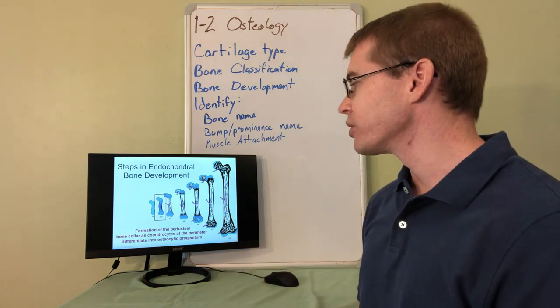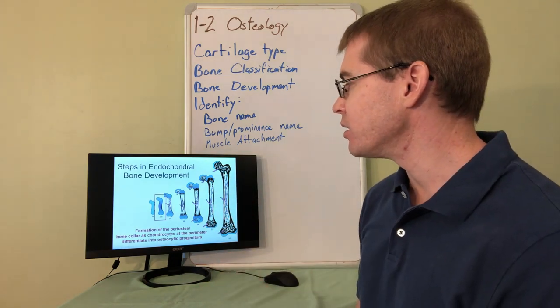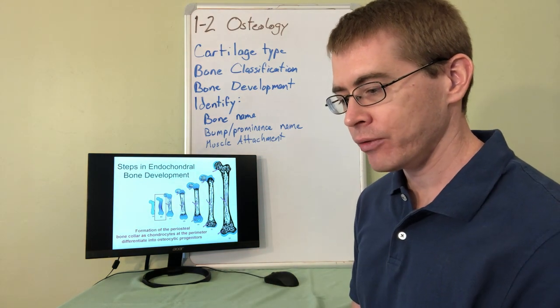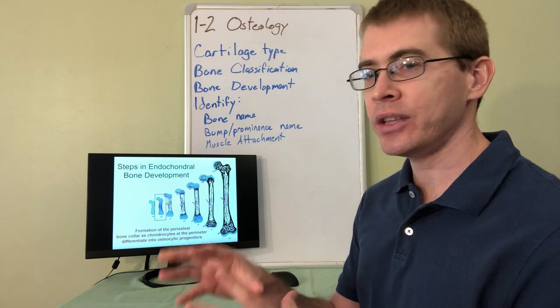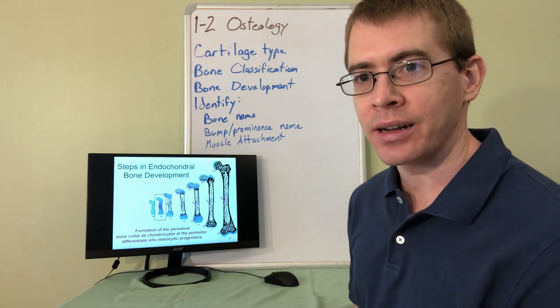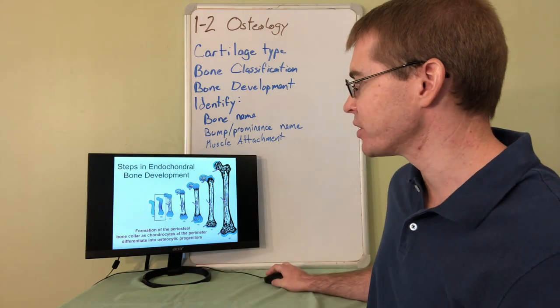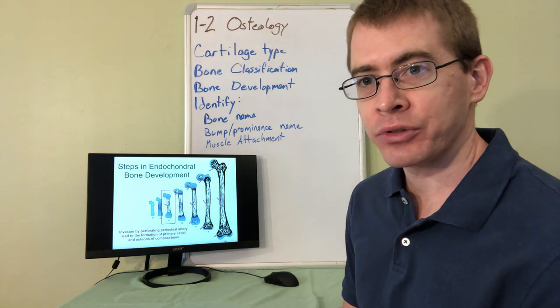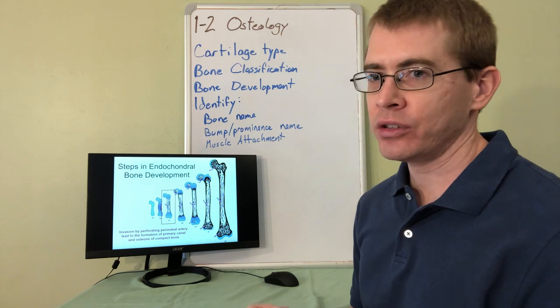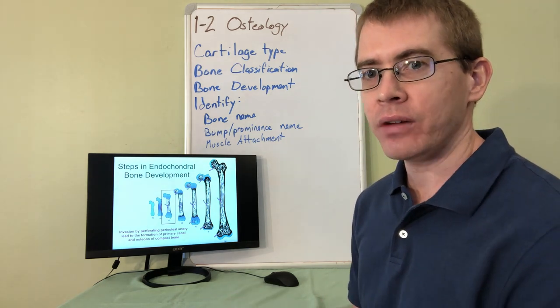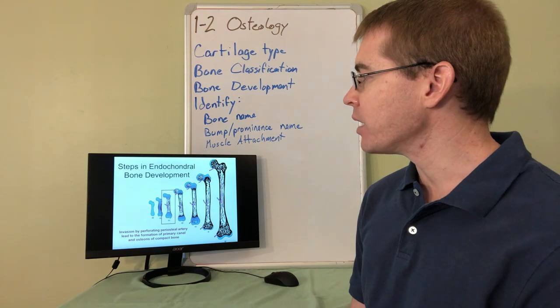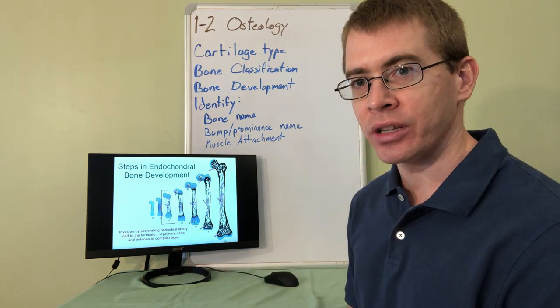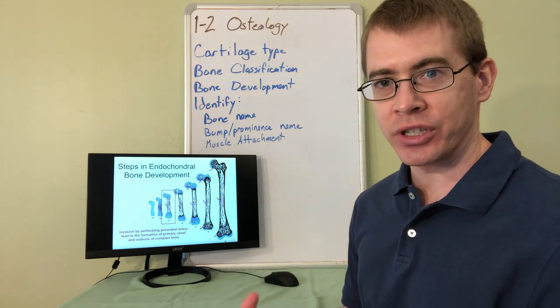As those chondrocytes condense more, they start to undergo the process of ossification, converting these chondrocytes into osteoblasts and osteocytes. Shortly thereafter, blood vessels are attracted into the core of the shaft, the diaphysis of these bone models. And in this process, it leads to widespread ossification and the formation of these Haversian canals.